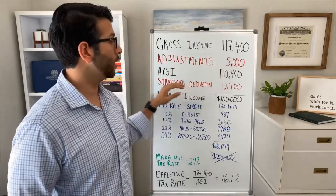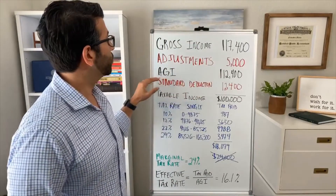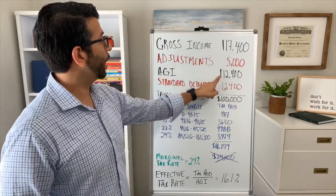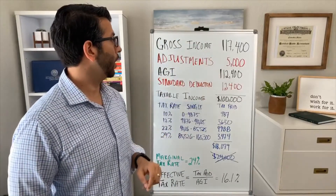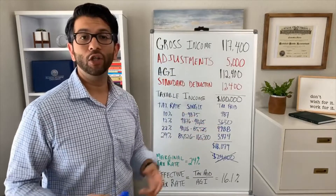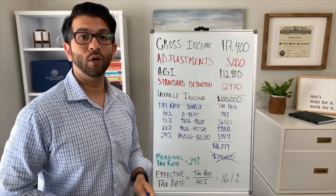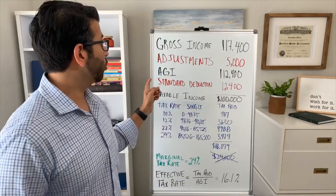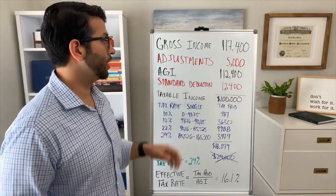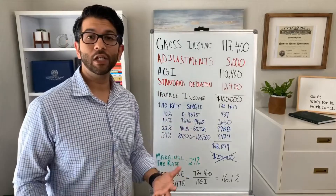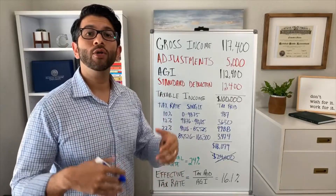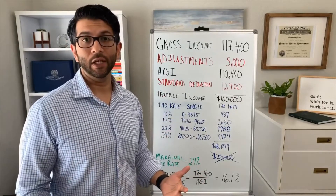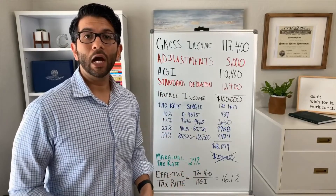That term sometimes confuses people. All adjusted gross income is, is their gross income minus these handful of adjustments that they may be allowed to take. So now we're at an AGI of $112,400.